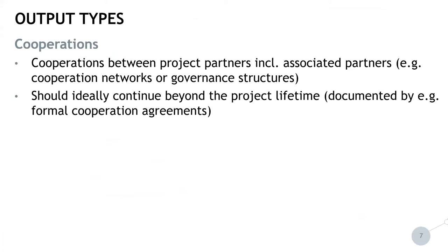Let us start with cooperations. Cooperations between project partners including associated partners are considered within this output type. They can, in the frame of a project, be further formalized, for example in cooperation networks, or the project could lead to the setting up of respective governance structures. Ideally, these cooperations established in the frame of the project should continue beyond the project lifetime, and in order to reflect this in the indicator system, they need to be documented in formal cooperation agreements.